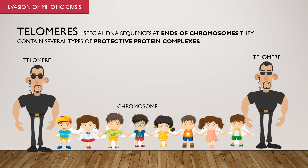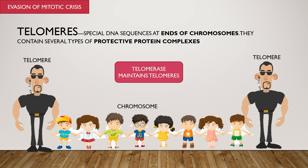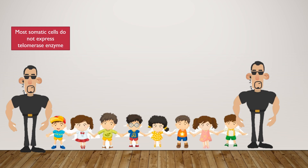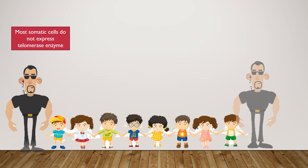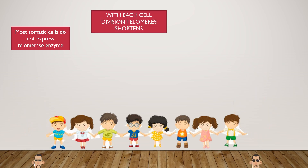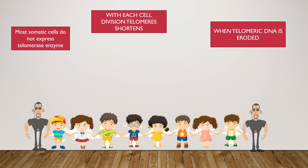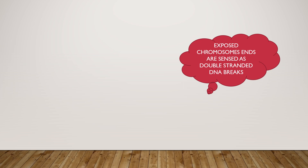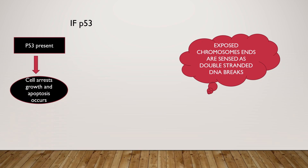Telomerase is the enzyme which maintains the telomeres. Most somatic cells do not express the telomerase enzyme, so with each cell division the telomeres shorten. When telomeric DNA is eroded, the exposed chromosome ends are sensed as double-strand DNA breaks. This activates the tumor suppressor p53, and the cell arrests growth and apoptosis occurs.